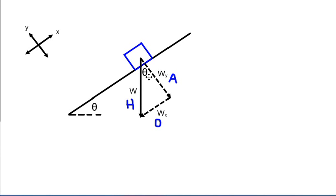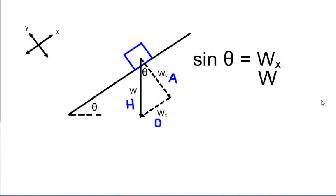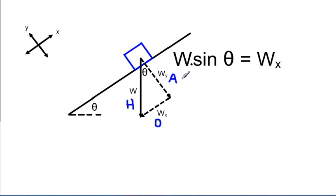Since WX is opposite and W is the hypotenuse, opposite over hypotenuse equals sine theta. So sine theta equals WX over W. Multiplying both sides by W, we get WX equals W multiplied by sine theta. Therefore, WX is always equal to W sin θ. Similarly, WY is the adjacent side over the hypotenuse, which gives us WY is always equal to W cos θ.